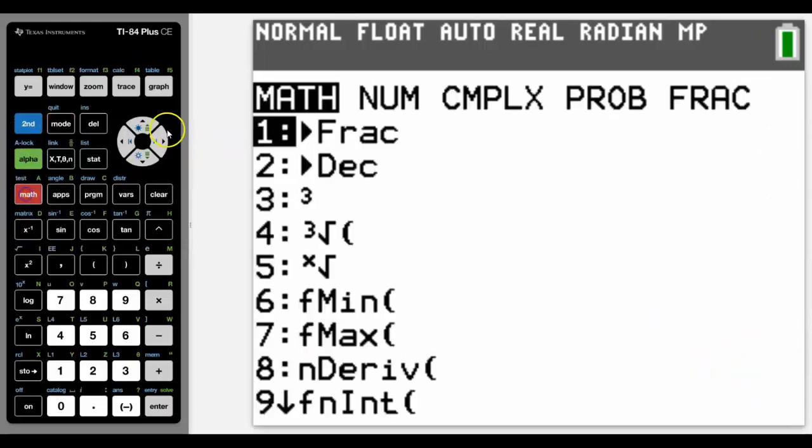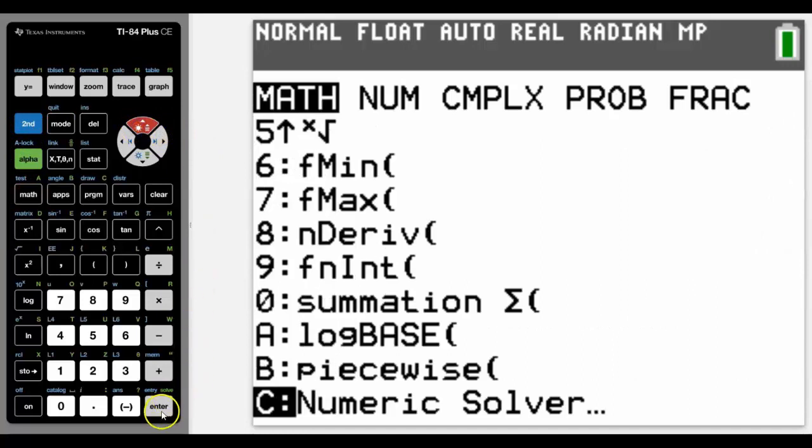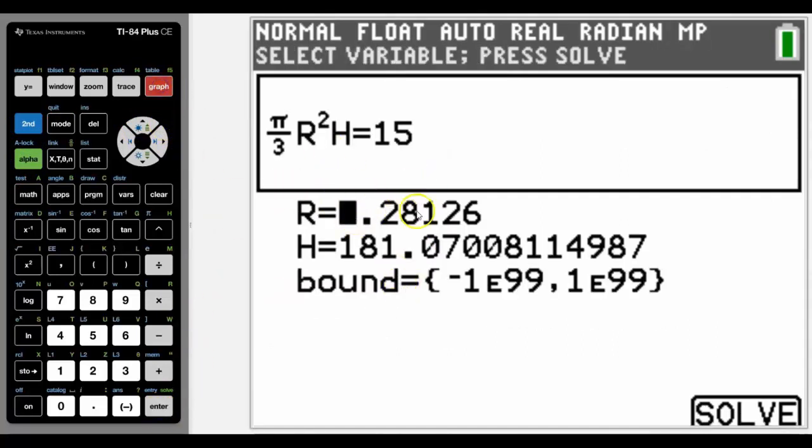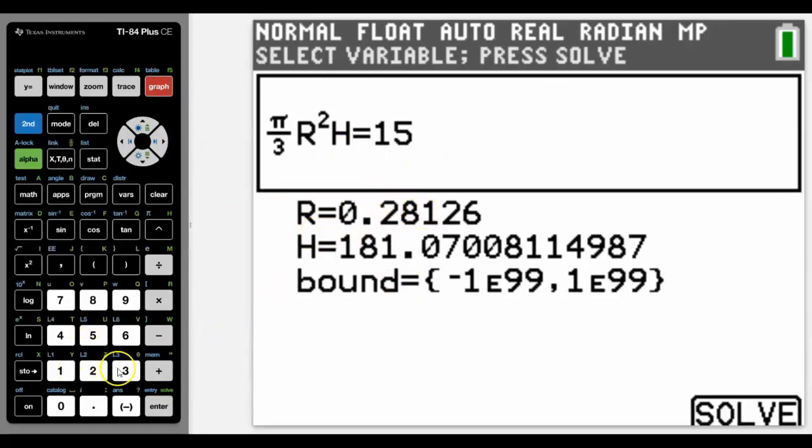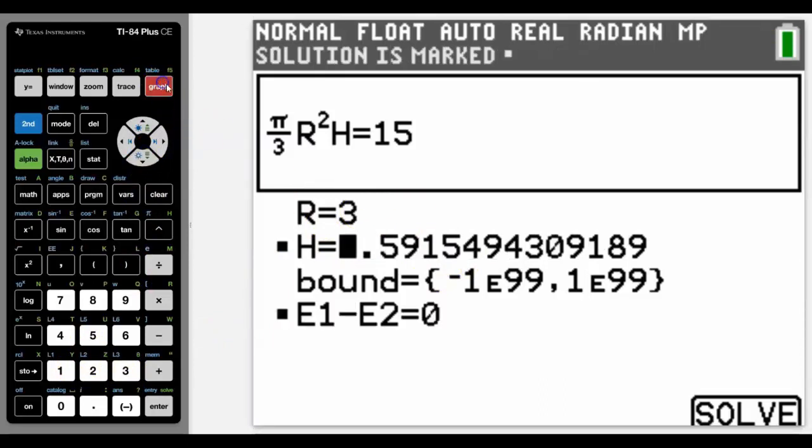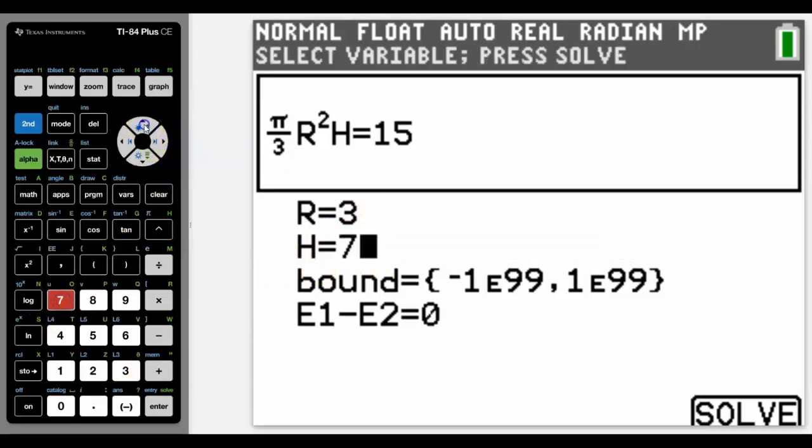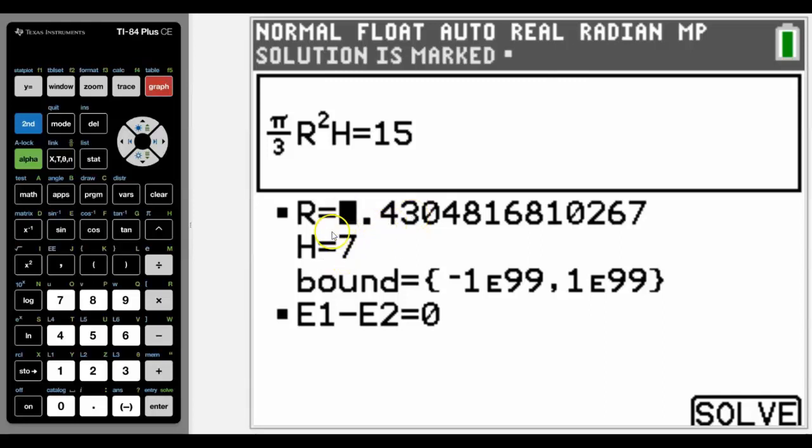Now we know there's an infinite number of values for r and h that will give a volume of 15. So how could we find other ones? Well to do that, what you actually need to do is when you get to your bounds, if you wanted to have a radius of a different value, let's say 3, you come down to the h value and it would solve it for the radius of 3. If you wanted the height to be 7, you came up to the radius and then click solve—it would give you the radius for a height of 7. So it works for two variables and more than two variables, which is a nice little feature.